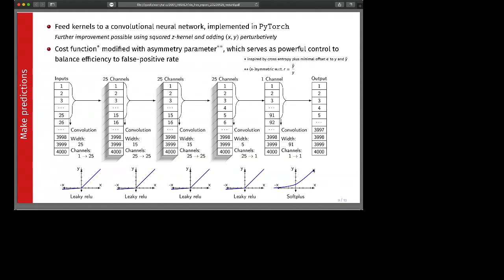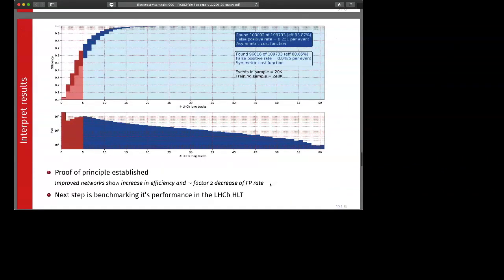The cost function of this network is inspired by binary cross entropy with an asymmetry parameter as a powerful control to balance the efficiency to false positive rate.